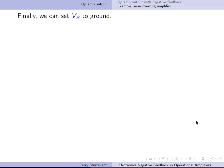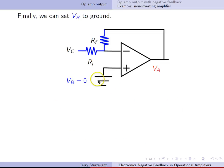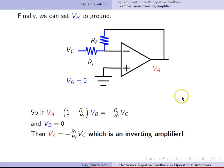So finally, we can set VB to ground in this case. So we get this, and so VA equals minus RF over RI times VC, and you'll notice this is actually just an inverting amplifier.